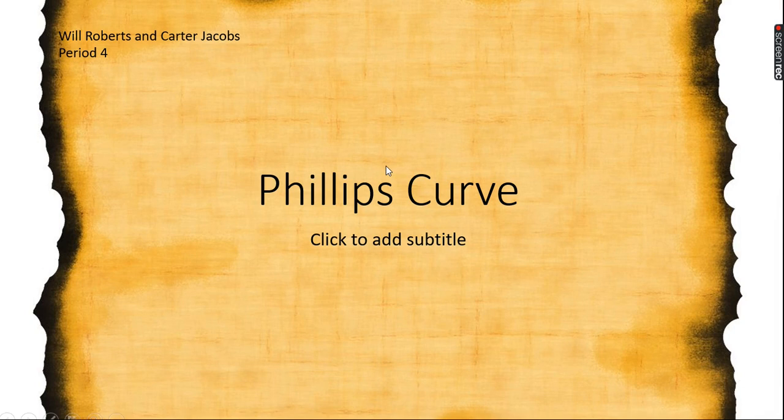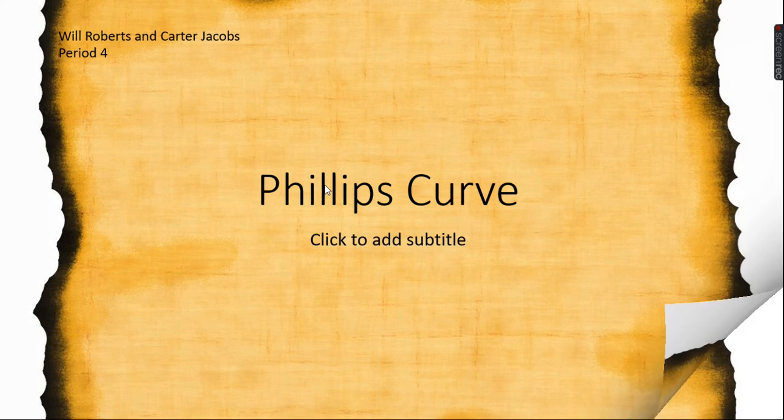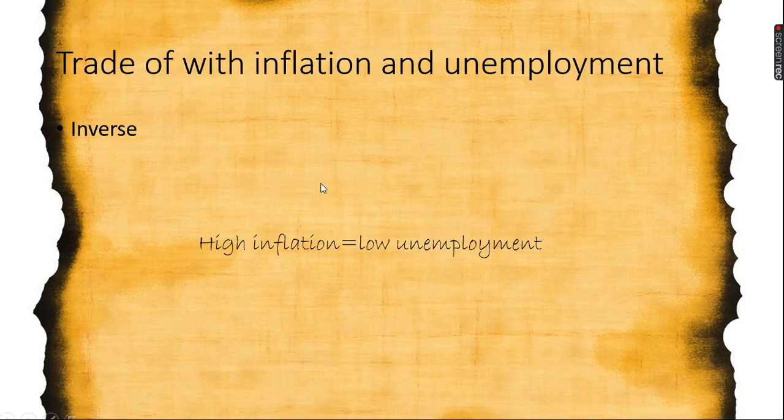Phillips Curve by Will Roberts and Conor Jacobs, Period 4. Inflation and unemployment have an inverse relationship. When there is high inflation, there will be low unemployment and vice versa, as shown by this formula.